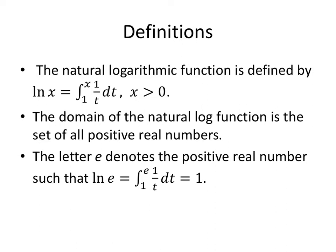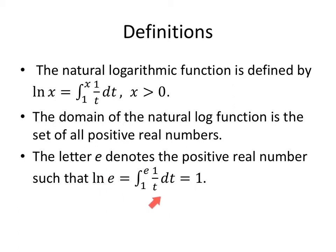The Natural Logarithmic Function is defined by the natural log of X equals the integral from 1 to X of 1 over T, DT, assuming X is positive. The domain of the natural log function is the set of all positive real numbers. The letter E denotes the positive real number such that the natural log of E equals the integral from 1 to E of 1 over T, DT, which equals 1. So the natural log of E is 1, and this is a new definition — one you can finally make precisely in your first semester of calculus.